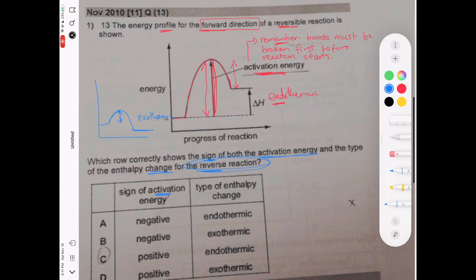The sign of the activation energy, which is this one, is always positive because you always have to break the bonds before a reaction starts, so it's always going to be positive. So it's either C or D. And then it's asking about the energy change or the enthalpy change. This one again is endothermic, so the opposite will be exothermic. And that's the answer to this question, it's D.